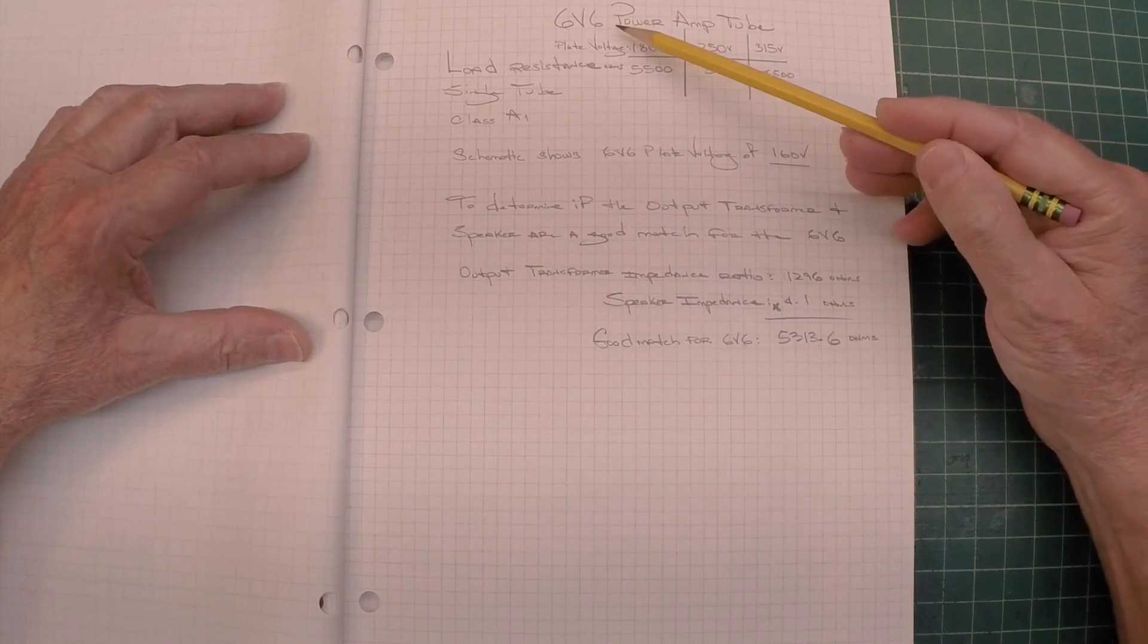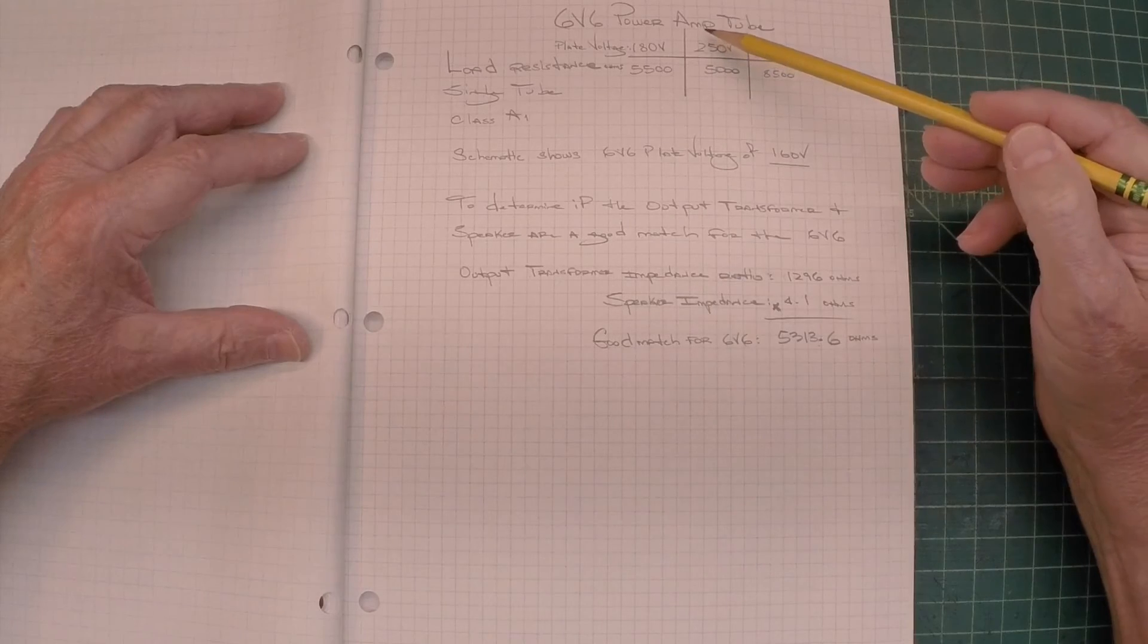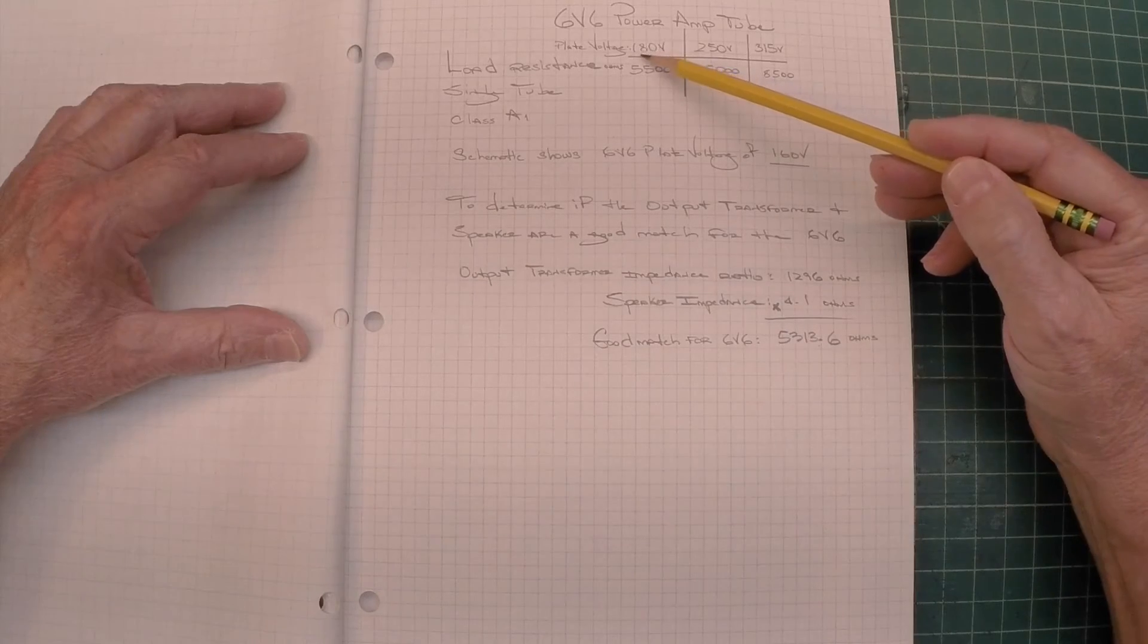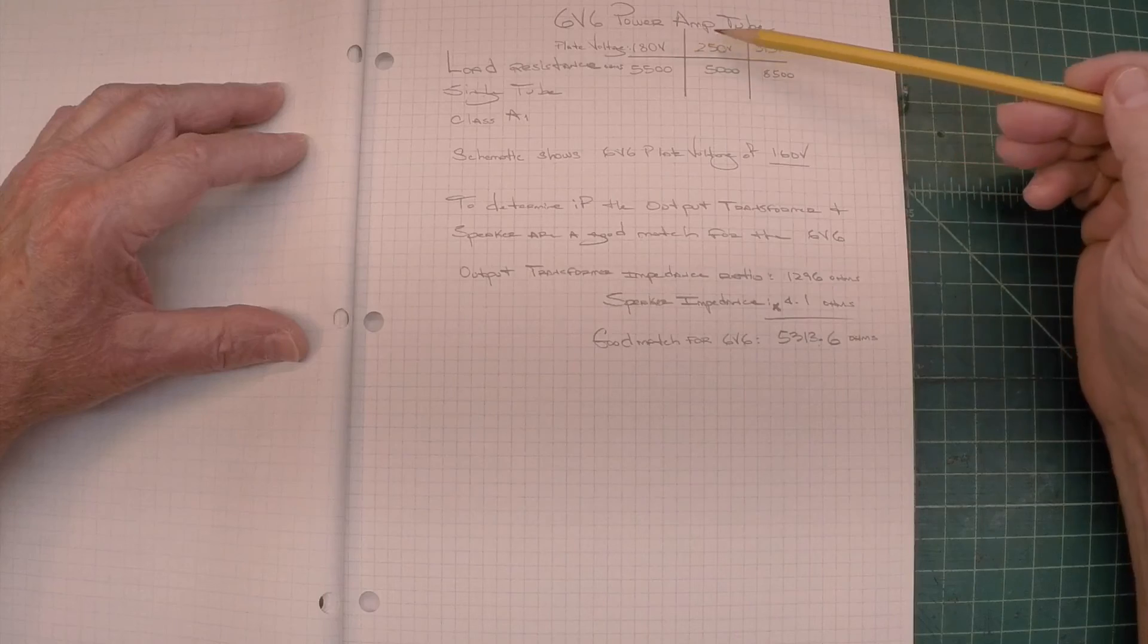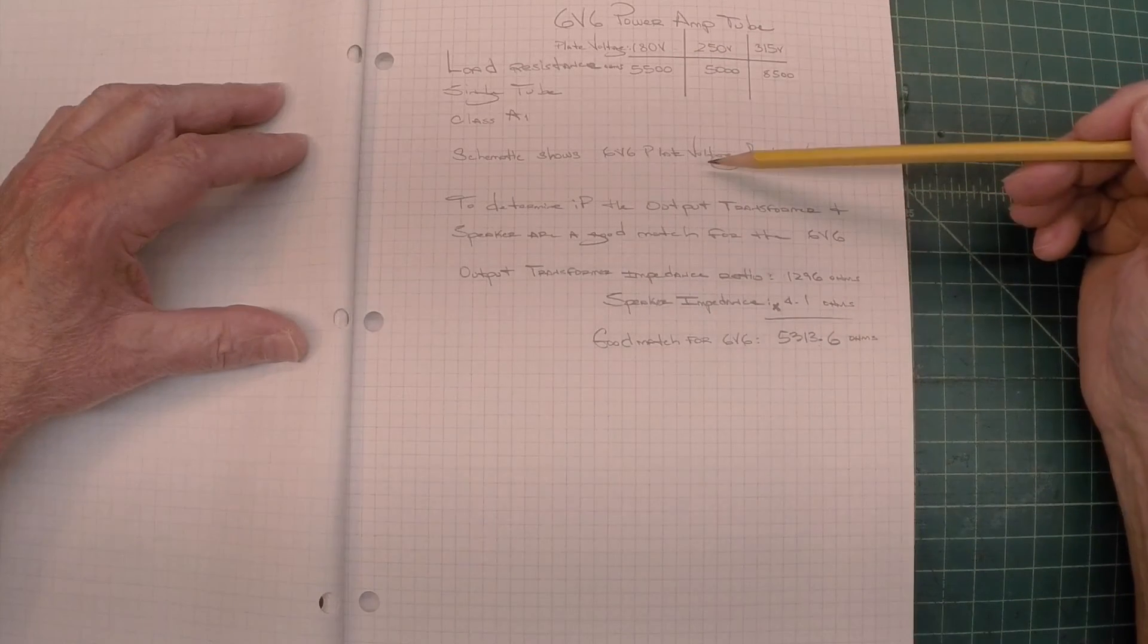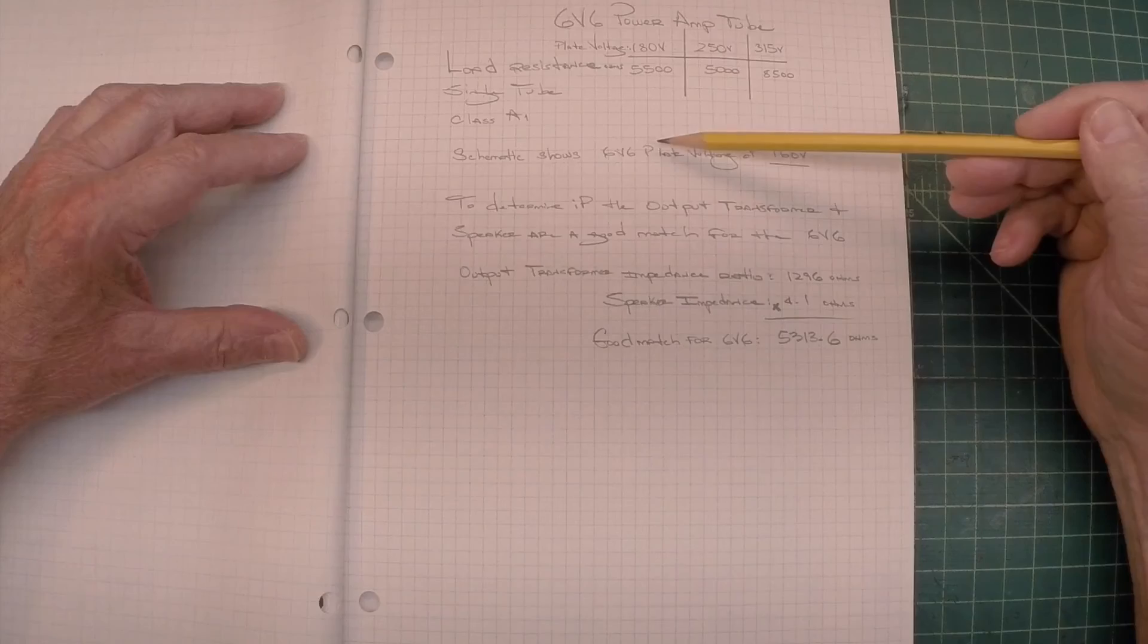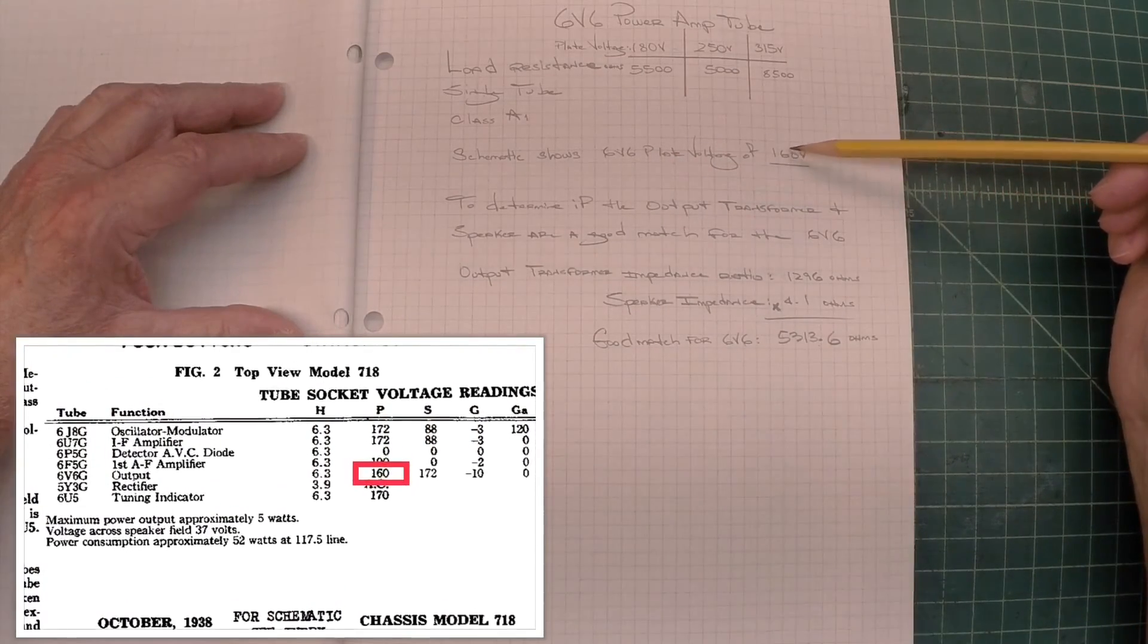Next thing I looked at: the power output tube in this particular Crosley radio is a 6V6, and if you go down and look at the specs, you'll see it's specced out at various voltages—180, 250, 315—and when I go back and look at the schematic itself using a reduced line voltage, it shows the plate voltage at 160 volts.